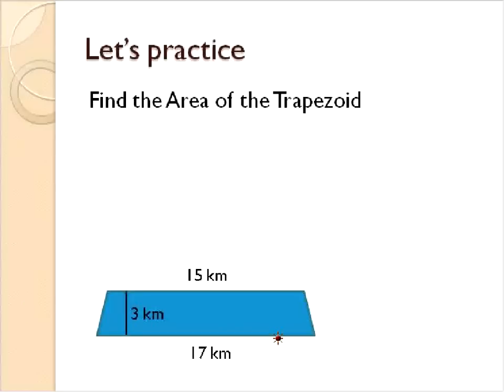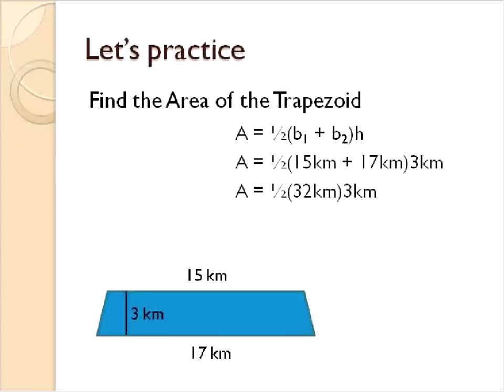So our question here for the area of this trapezoid, we will take our equation half of base 1 plus base 2 times the height. So base 1 is 15, we're going to substitute that in there. Base 2 is 17, we'll substitute that in here. And the height is equal to 3 kilometers. 1 half times 15 plus 17 times 3. 15 and 17, they're inside the parentheses, so that's what we do first. We add them together and we get 32, and 1 half of 32 is 16 times 3, which will give us 48 kilometers squared. So that is the area of this trapezoid.